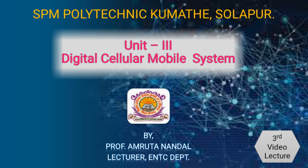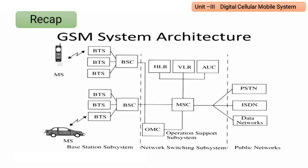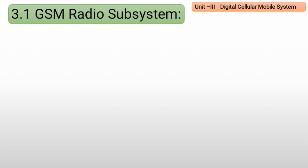In the previous lecture, we had discussion on GSM architecture. The GSM system consists of mainly mobile station, base station subsystem, network switching subsystem, and operation subsystem. We had already discussed the working and function of all these subsystems. In today's video lecture, we will discuss a new topic of GSM, that is GSM radio subsystem.